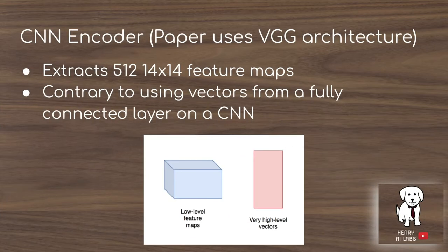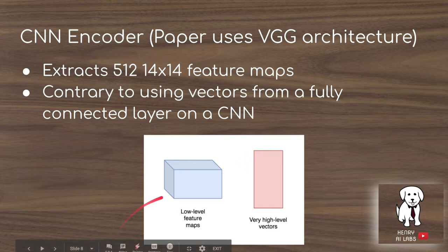The first part of the model is the CNN encoder. The paper is going to use the VGG architecture which was on top of the state of the art in 2016. It's going to take 512 of these 14 by 14 feature maps. This is different from image captioning models that came before this paper that use vectors at the end of fully connected layers of CNNs.